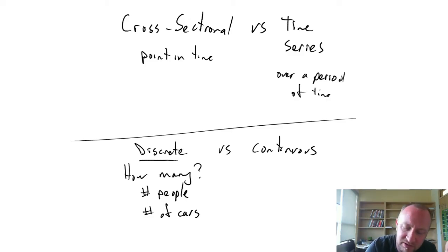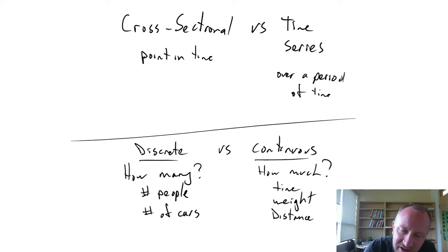As opposed to a continuous variable, sometimes this is thought of as saying 'how much?' So an example of a continuous variable might be time, weight, distance. These are variables that I can divide into increasingly small fractions, or any size of a fraction. I can look at 1.6325 pounds. So we can look at weight in any particular level, whereas a discrete variable, we're looking at a specific number of objects.